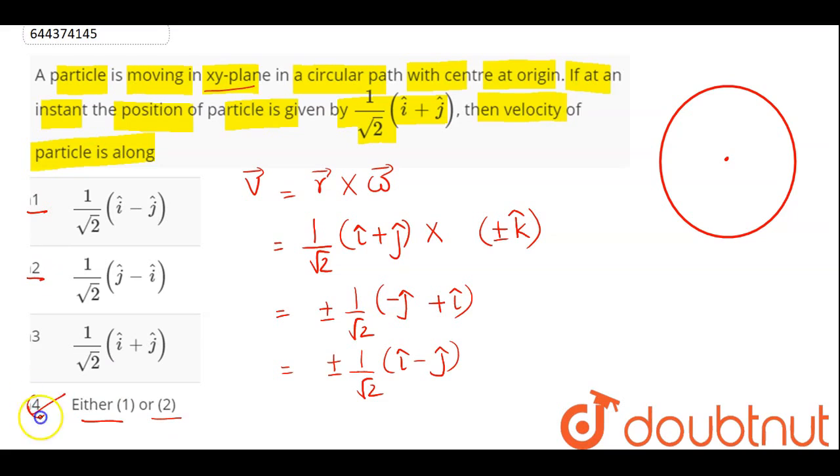Amongst the four options, the correct option is option number 4, either 1 or 2. Hence, we can say 4 is the correct answer. So 4 is our answer.